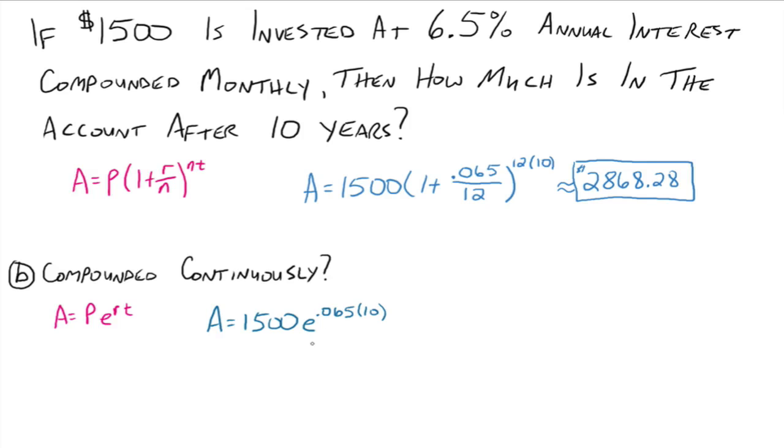Okay, if you have a scientific calculator, then you have an e button on your calculator. All right, so make sure you use your calculator correctly, and this time you should get the number $2,873.31. So a little bit more than we would have if we would have just compounded monthly.